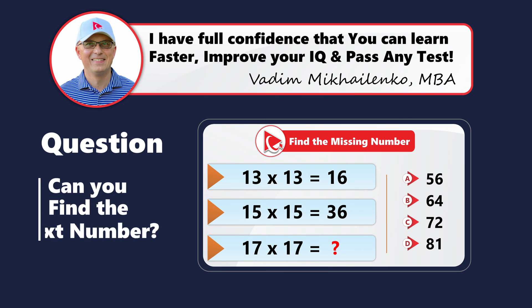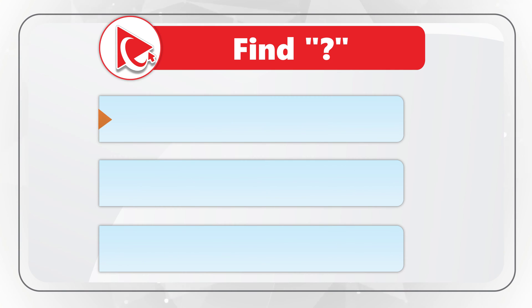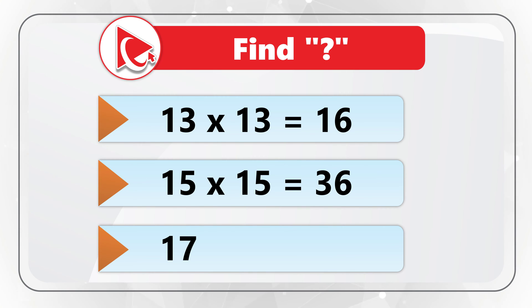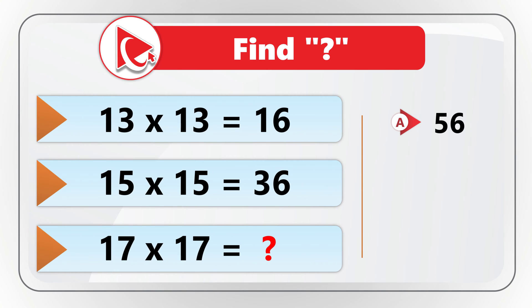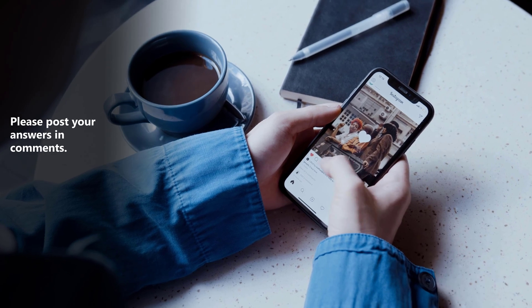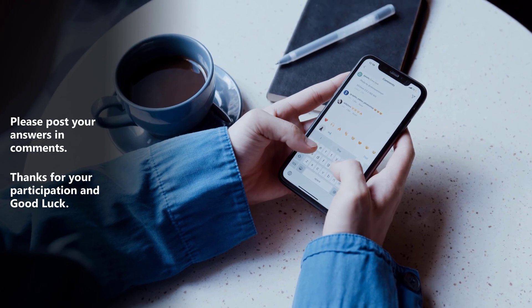Surprise, surprise! I have a problem for you to solve. You need to find the missing number. You're presented with three expressions: 13 by 13 equals 16, 15 by 15 equals 36, and 17 by 17 equals the missing number. You need to calculate and select from four choices: A=56, B=64, C=72, D=81. Please pause this video for 10 to 15 seconds to see if you can calculate the solution, then post your answer in comments. Thanks for participating and good luck.